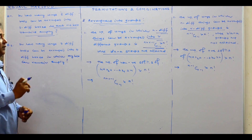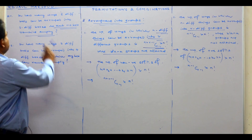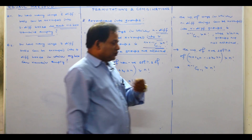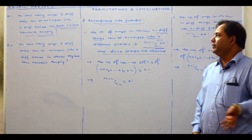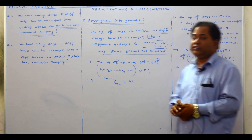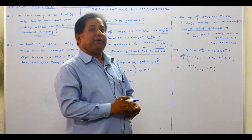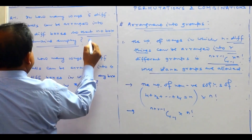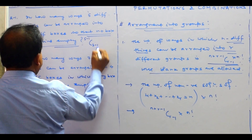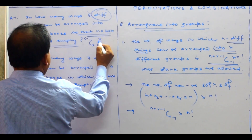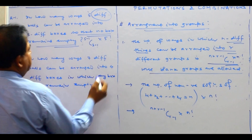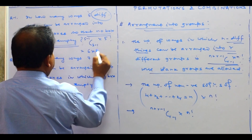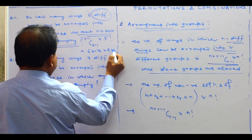In how many ways can five different balls be arranged into three different boxes so that no box remains empty? No box remains empty means blank groups are not allowed, so we find the number of positive solutions: (5−1)C(3−1) = 4C2 = 6, multiplied by 5! = 120, giving 720.